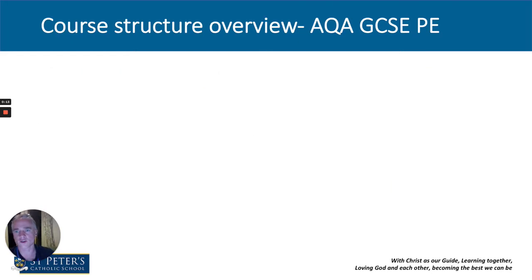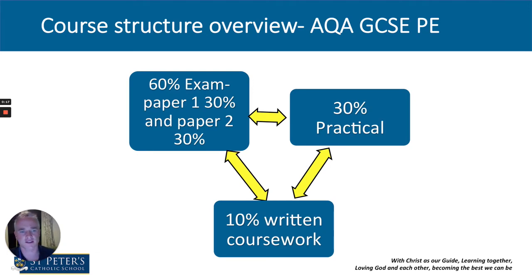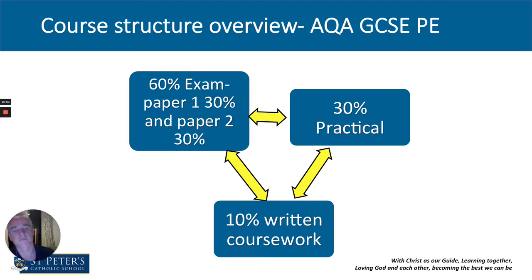I'm going to start with the course structure and the overview. So over the next two years, when you embark on your journey through GCSE PE, we're preparing you for two exams at the end of year 11 — paper one and paper two — and they will form 60% of the final grade. Along the way, we will be assessing you in a variety of different sports, and we'll pick your top three, which will form 30% of the final grade. The final 10% is based on a written piece of coursework that will analyse your performance in one of your top sports or a chosen sport.